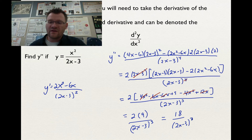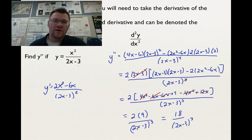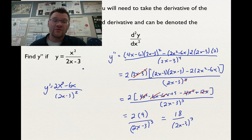Taking the second derivative takes a little bit of time and a lot of space depending on what rules you're going to use, but you can take the second derivative. You can use the quotient rule in this case, or you could probably get the same answer by using the chain rule and the product rule, if you change this to (2x minus 3) to the power of negative 1 and move it up.